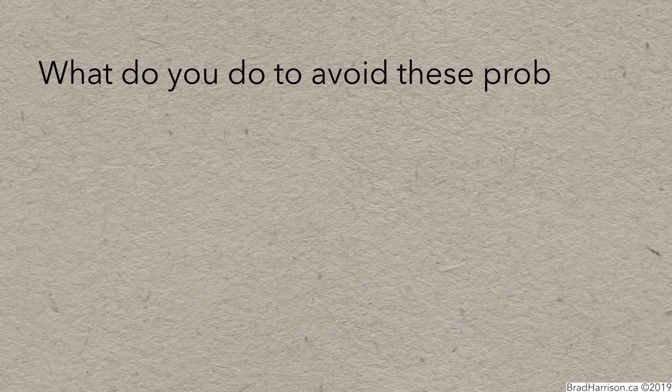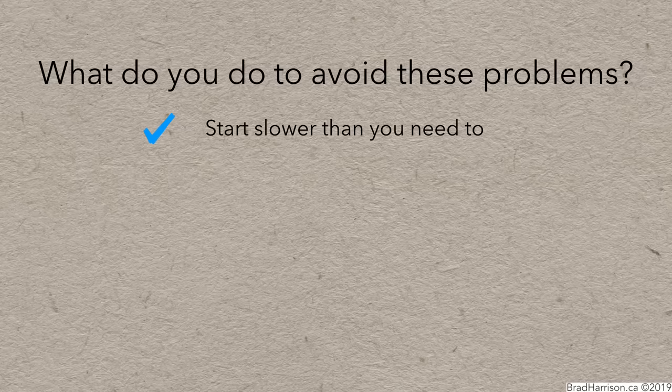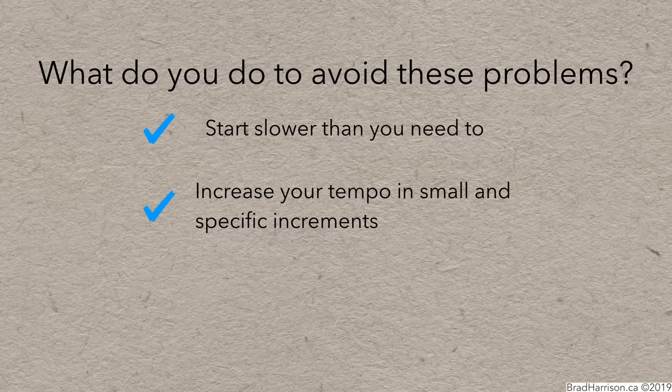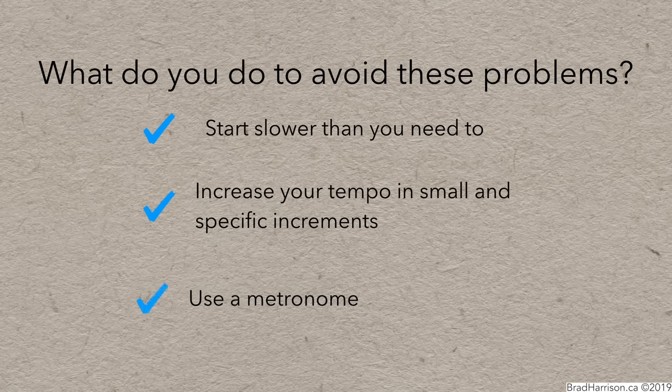So, what do you do to avoid these problems? First, start slower than you need to. Start well below the tempo at which you can play with 100% accuracy. Second, increase the tempo in small and specific increments. That way you'll hardly notice the increases in tempo as you progress. Finally, use a metronome to help manage your tempo.